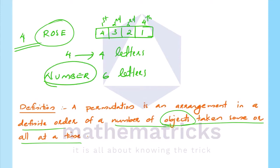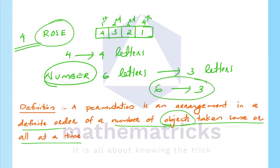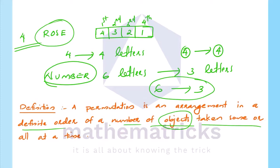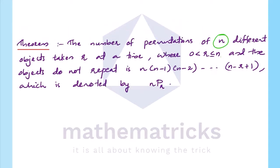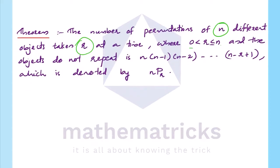The first example has 4 letters arranged in 4 places. The second example uses 3 letters chosen from 6. The number of objects are taken some or all at a time. The number of permutations of n different objects taken r at a time, where 0 < r ≤ n, and objects do not repeat, is n × (n−1) × (n−2) × … × (n−r+1), denoted by nPr.